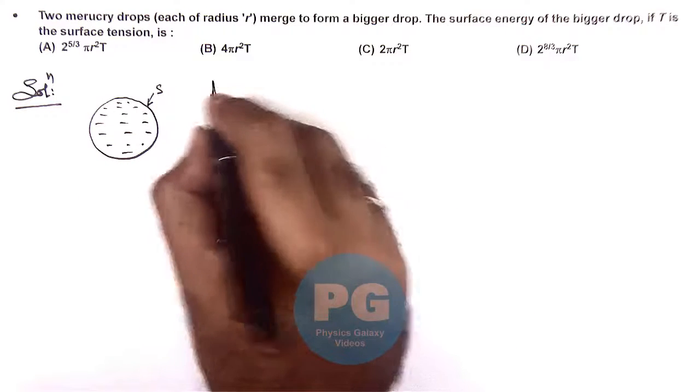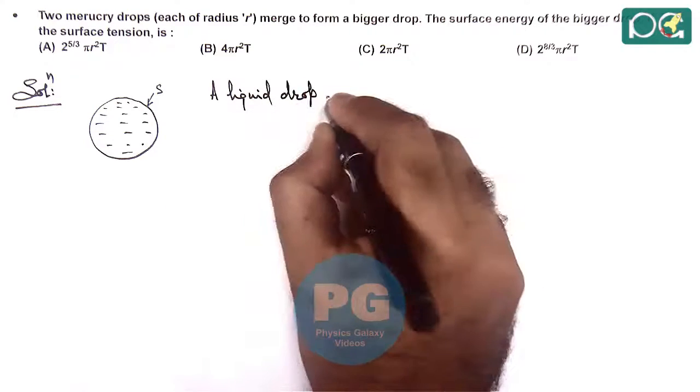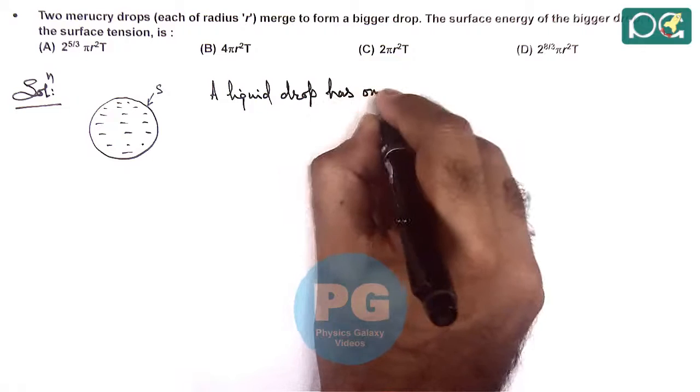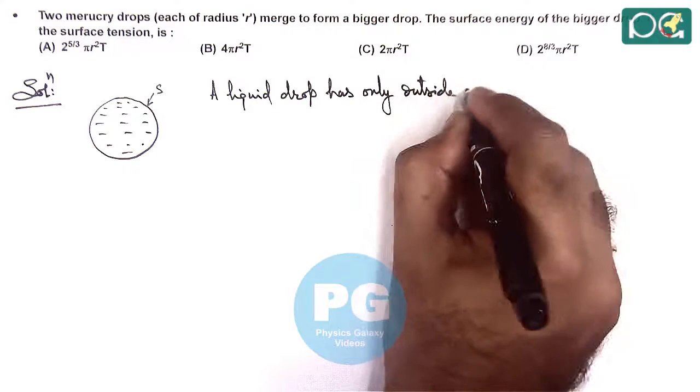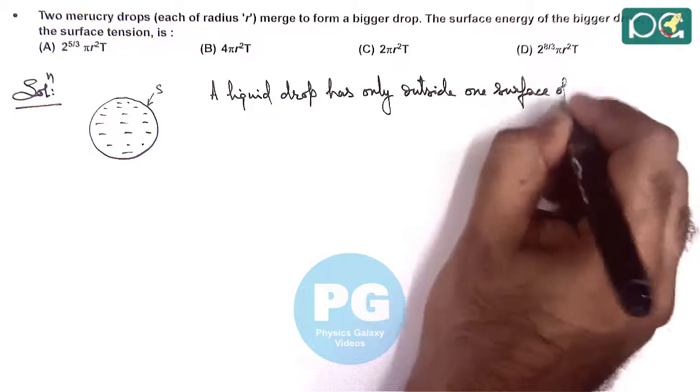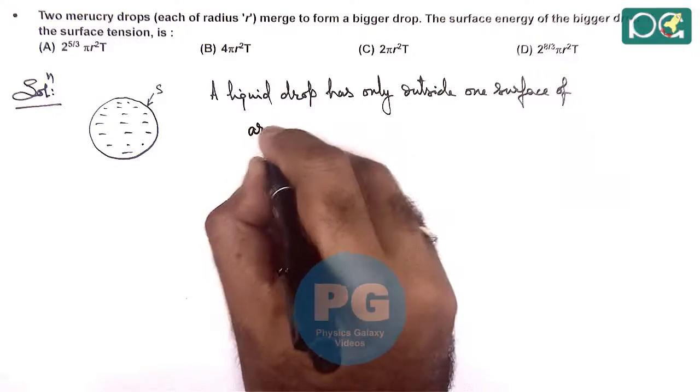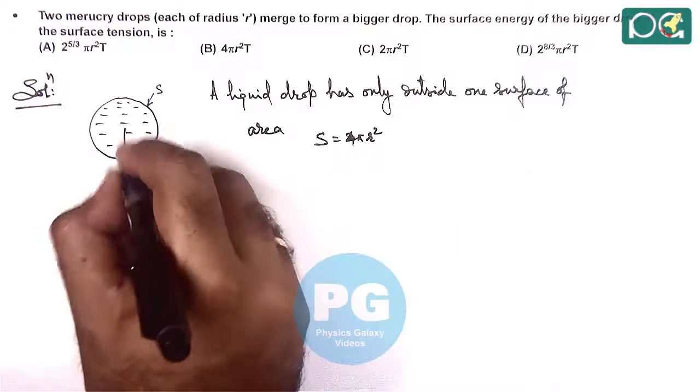We can write a liquid drop as only outside one surface of area S. We can write as 4πR², if it is of radius R.